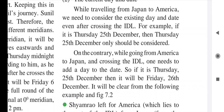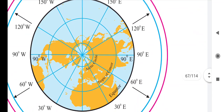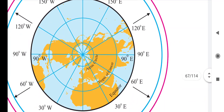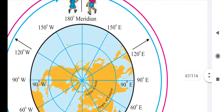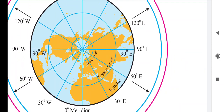While traveling from Japan to America, we need to consider the existing day and date even after crossing the International Date Line. For example, if it is Thursday 25th December, then Thursday 25th December should still be considered. Japan is on the east side of the prime meridian — the right hand — and America is on the west side. A person going from Japan to America, east to west, considers the same date because western countries are behind.